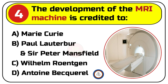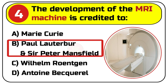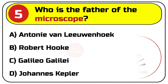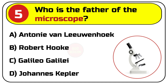Correct answer is B. Paul Lauterbur and Sir Peter Mansfield. Question number 5. Who is the father of the microscope? Options are: A. Antony van Leeuwenhoek, B. Robert Hooke, C. Galileo Galilei, D. Johannes Kepler.